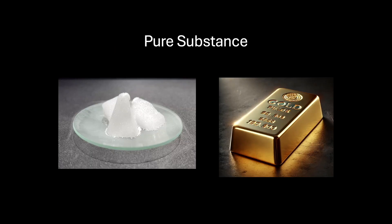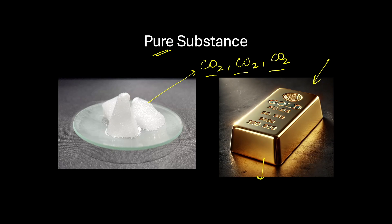Coming back to the example of dry ice — if it is composed of just carbon dioxide molecules, no other impurities, then we can certainly call it a pure substance. Now, if we look at this gold brick, let's say it has just the particles of gold — Au element is present, nothing else, no other impurity, let's say it's 24 karat — then this can also be called a pure substance.